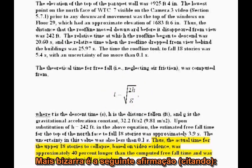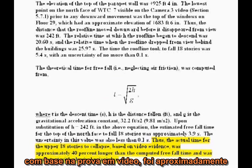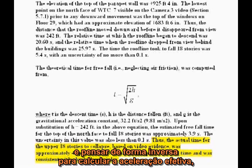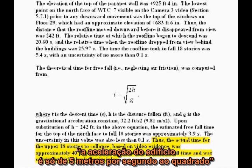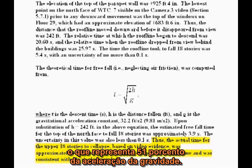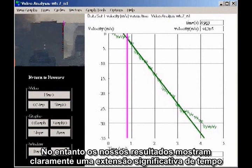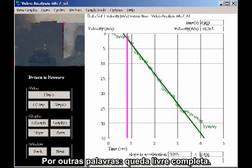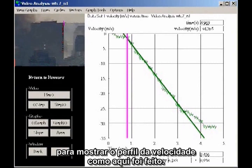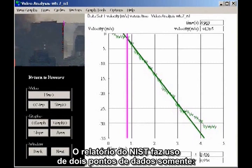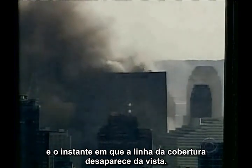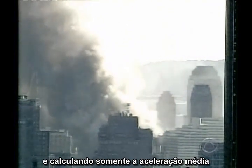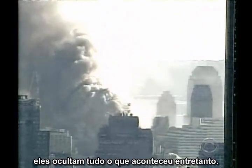More bizarre is the claim that, quote, "the actual time for the upper 18 stories to collapse, based on video evidence, was approximately 40% longer than the computed freefall time." If you start with a 40% increase in the time of fall and work backwards to compute the effective acceleration, their claim is equivalent to saying the acceleration of the building is only 5 meters per second squared — 51% of the acceleration of gravity. Our results clearly show a significant stretch of time in which the acceleration is indistinguishable from gravity itself. The NIST report uses only two data points: the supposed start of the collapse and the time the roofline disappears from view. By choosing an early starting time several seconds prior to the onset of freefall and computing only the average acceleration between that point and the disappearance of the roofline, they gloss over everything that happened in between.